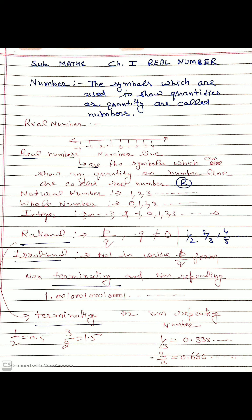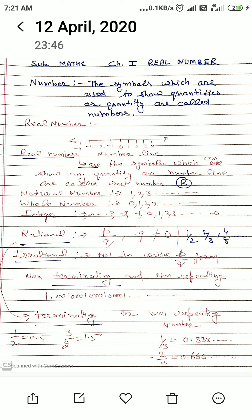A natural number is also a whole number, but whole number is not a natural number because zero cannot be a natural number.